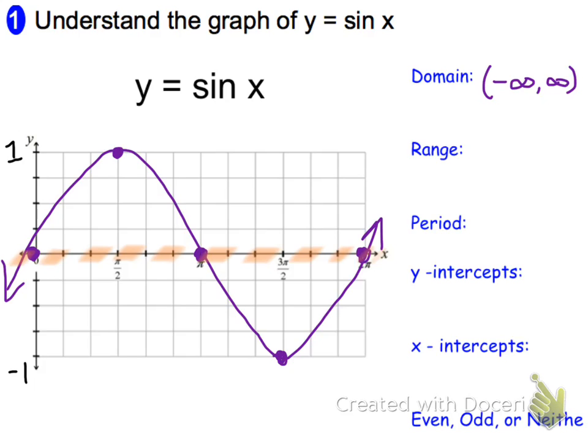As for the range, the low point on our graph is negative 1, and the high point is 1. So it's from negative 1 to 1, our range. And you can see we use brackets because we actually touched those points.